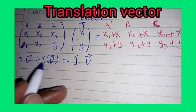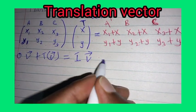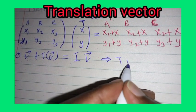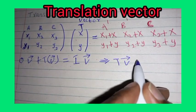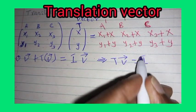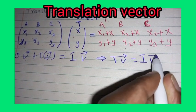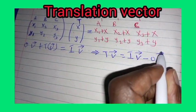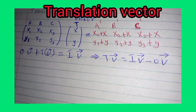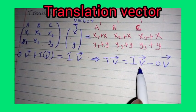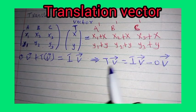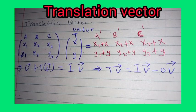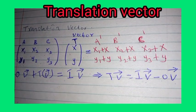From this, it follows that the translation vector can be given by image vector minus object vector. So in case you are given the image vector and the object vector, you can get the translation vector by subtracting: image vector minus object vector. That is how you deal with translation vector.